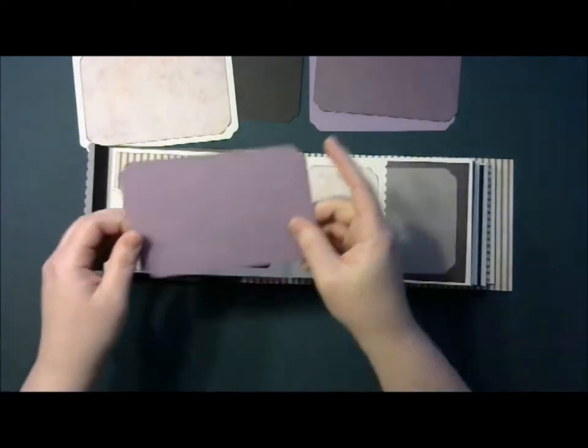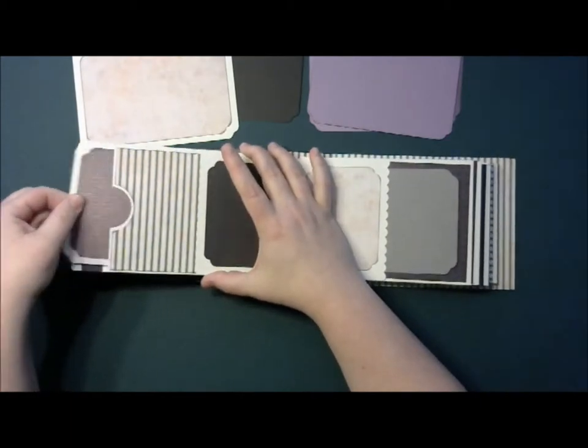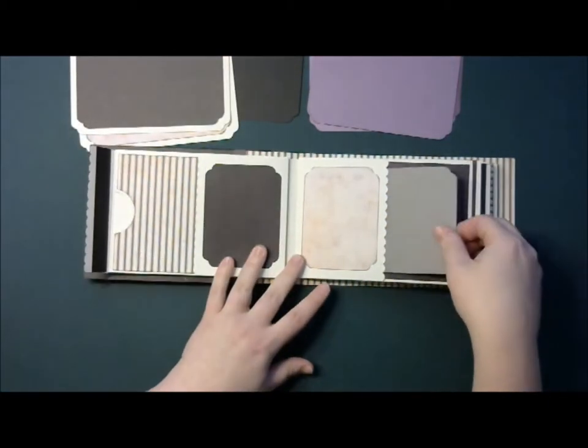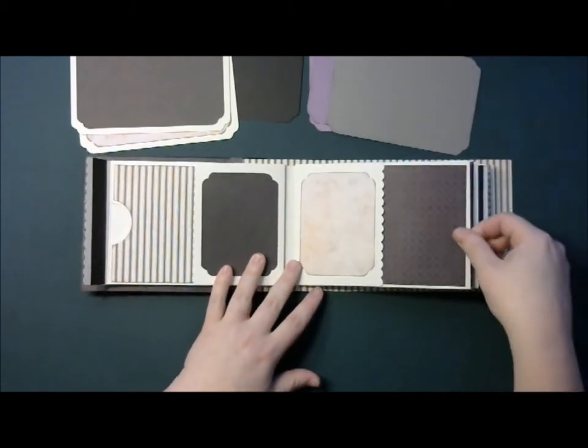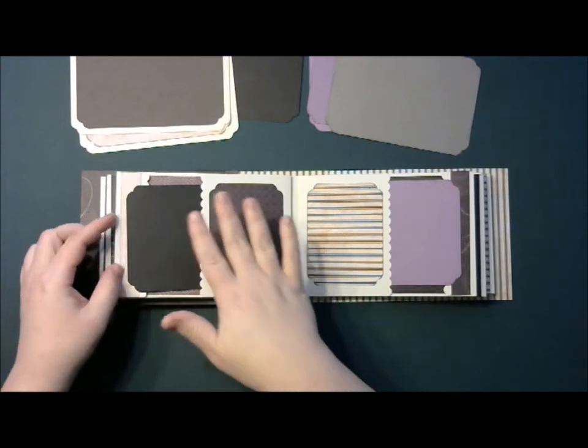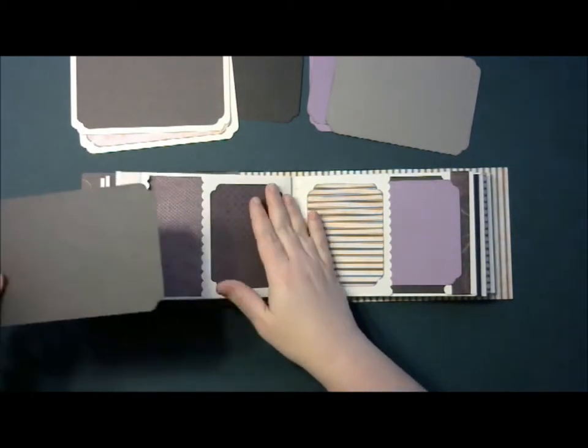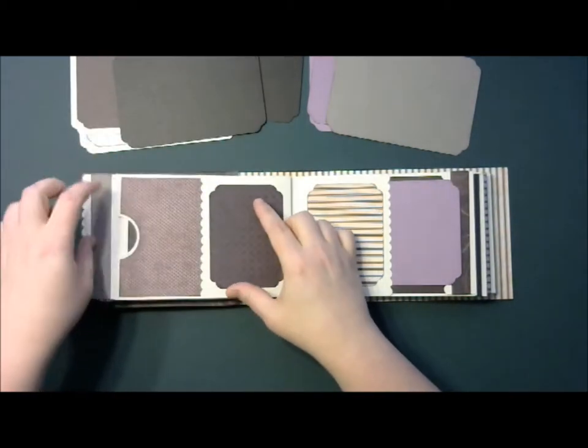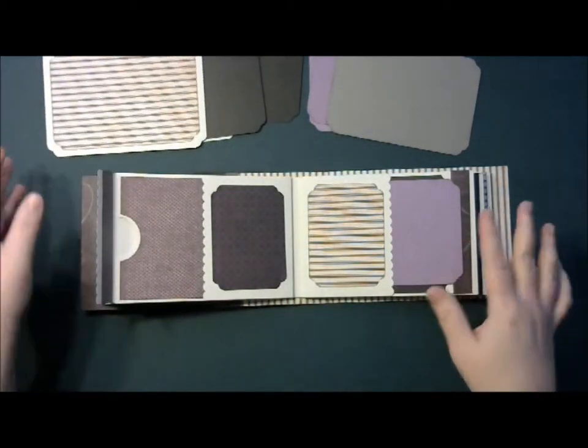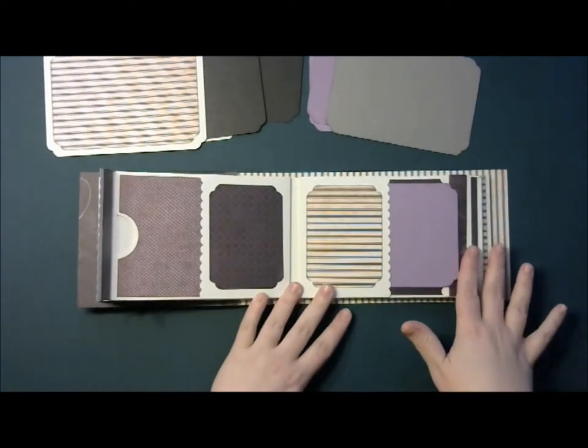So each of the pages are the same. Like I said, there's 6 pages in the album. So on the first 3 pages, the flaps are on this side of the album. So when you get to the center, again, we move to the other side.